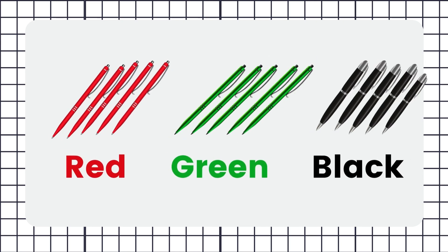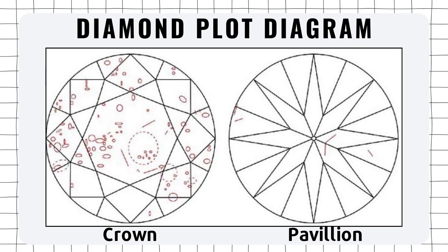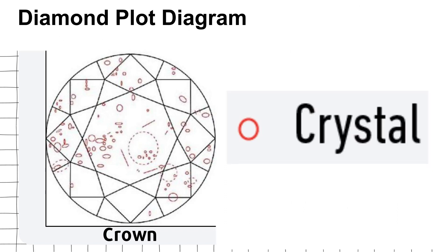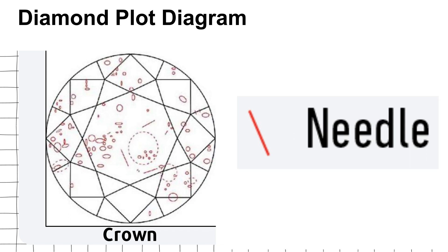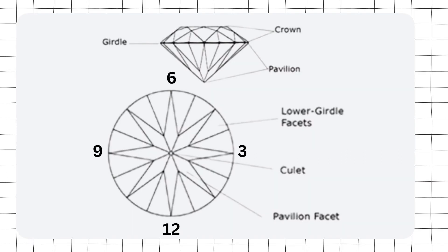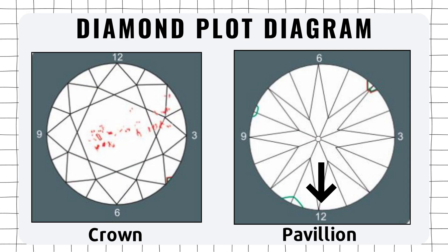We use red, green, or black color depending upon the inclusion or blemish present. For a crystal, we use a red color pen to draw a circle. For a needle, we use a red color pen to draw a line. For a natural, we use a green color pen to draw a triangle. This way we get the plotting of a diagram. The same method has to be followed for the pavilion of the stone — which is basically flipping the stone upside down. We don't rotate it or flip it left to right; we just flip it up to down. This makes it easier to plot the inclusions in the approximate place wherever they are.